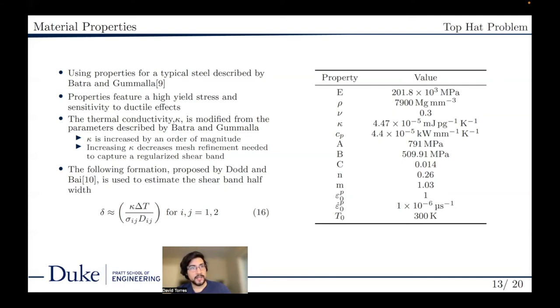To do this, we use an estimate proposed by Don and Bai which calculates the shear band half width based on the thermal conductivity, the temperature increase within the shear band, stress within the shear band, and the rate of deformation within the shear band. This value is typically between 0.1 and 0.01 millimeters for a typical steel.